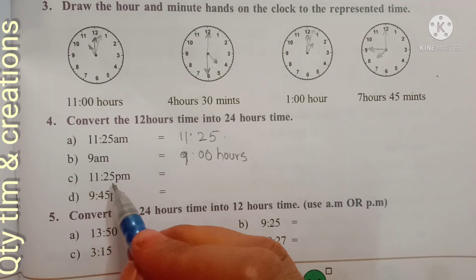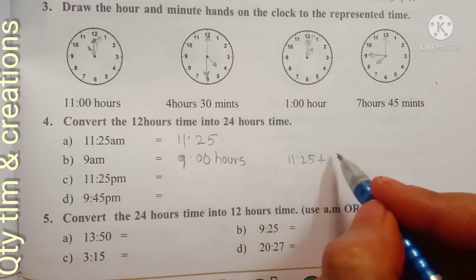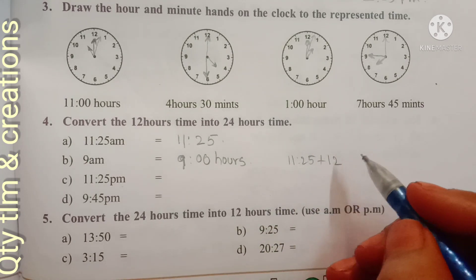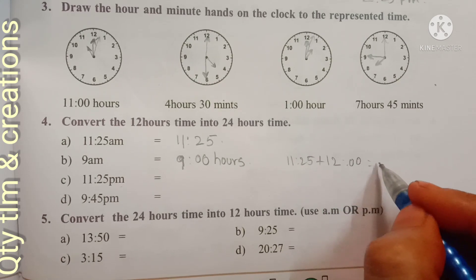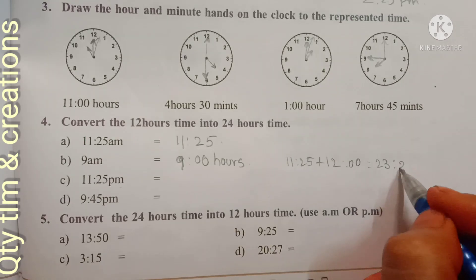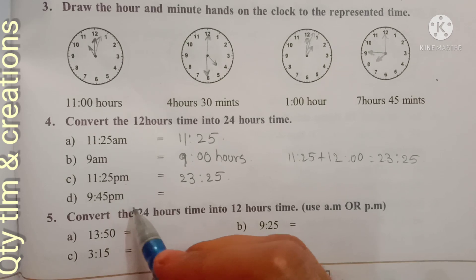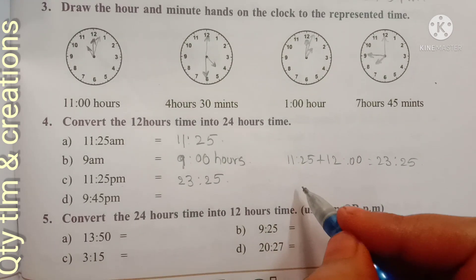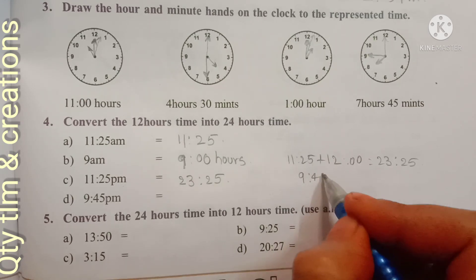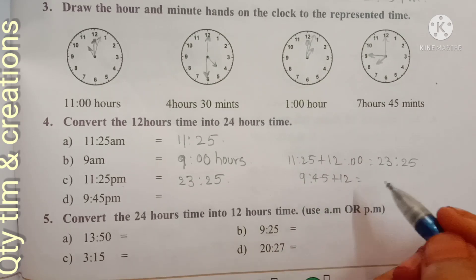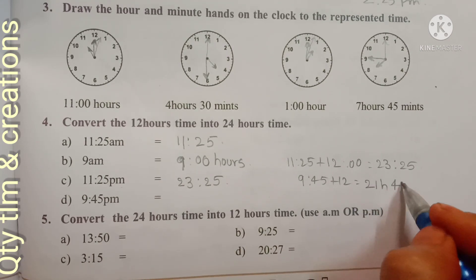For 11:25 PM, we add 12 hours to convert to 24-hour format: 11:25 plus 12 hours equals 23 hours 25 minutes. For 9:45 PM, we also add 12 hours: 9:45 plus 12 equals 21 hours 45 minutes.